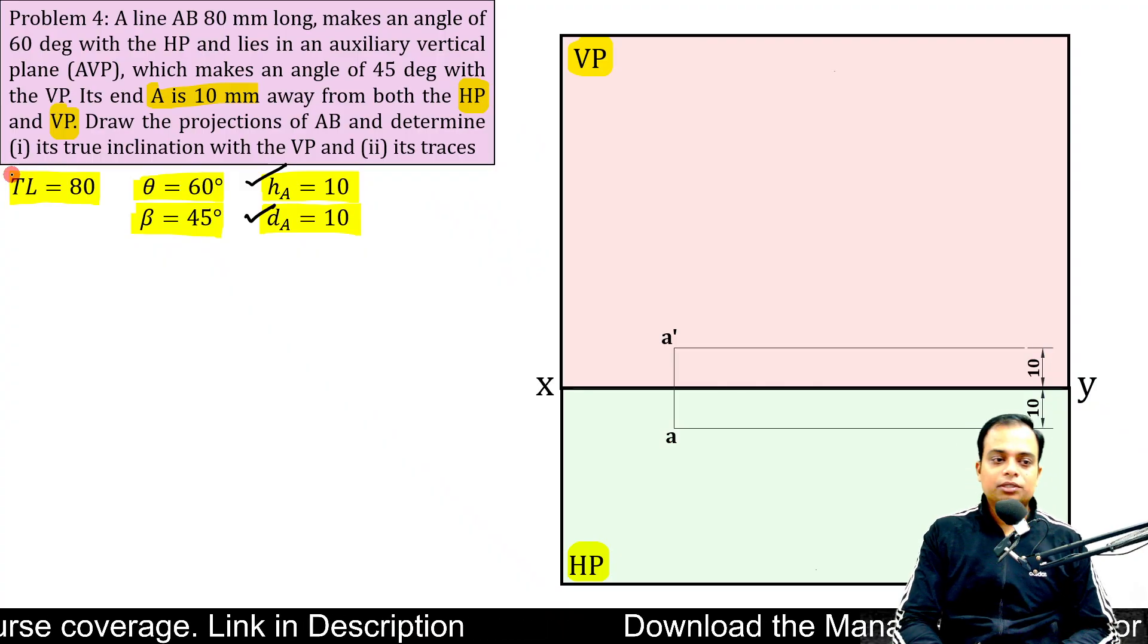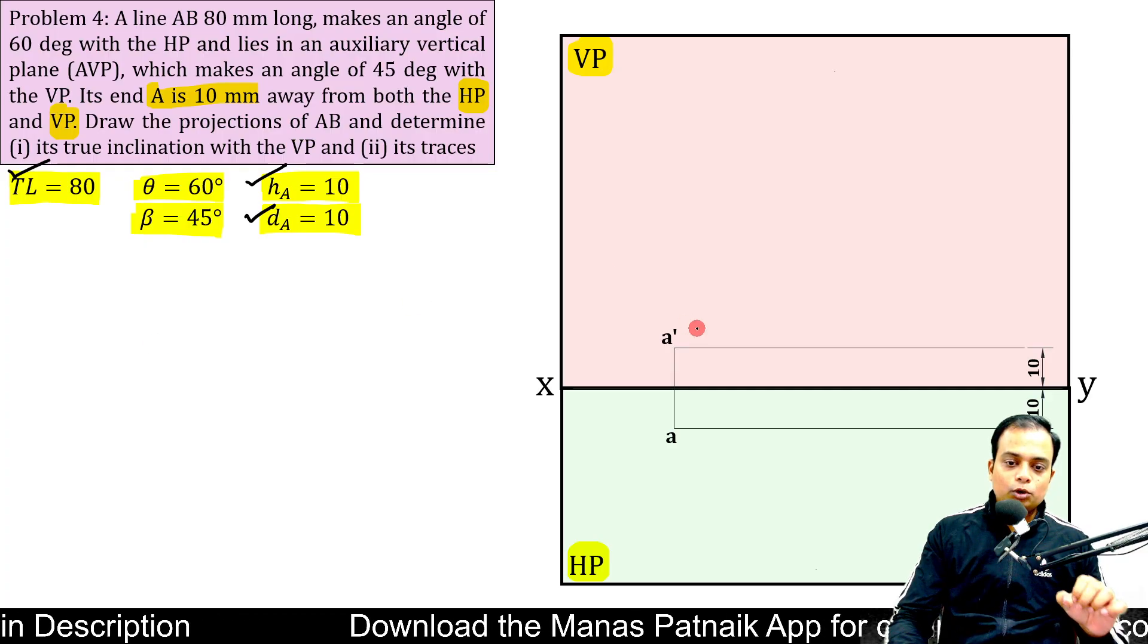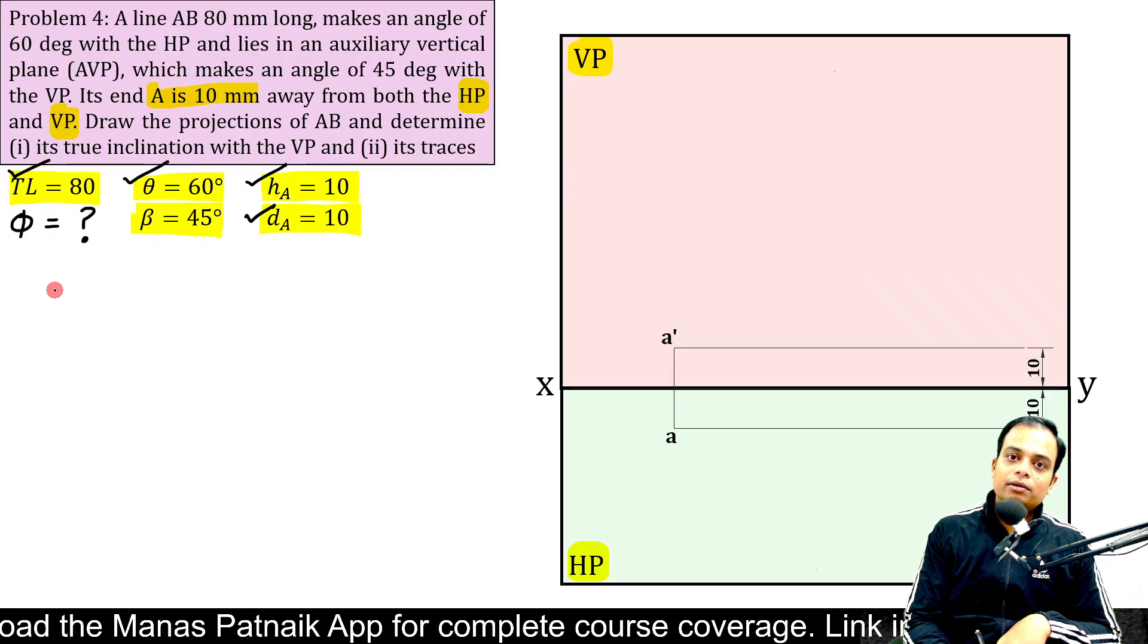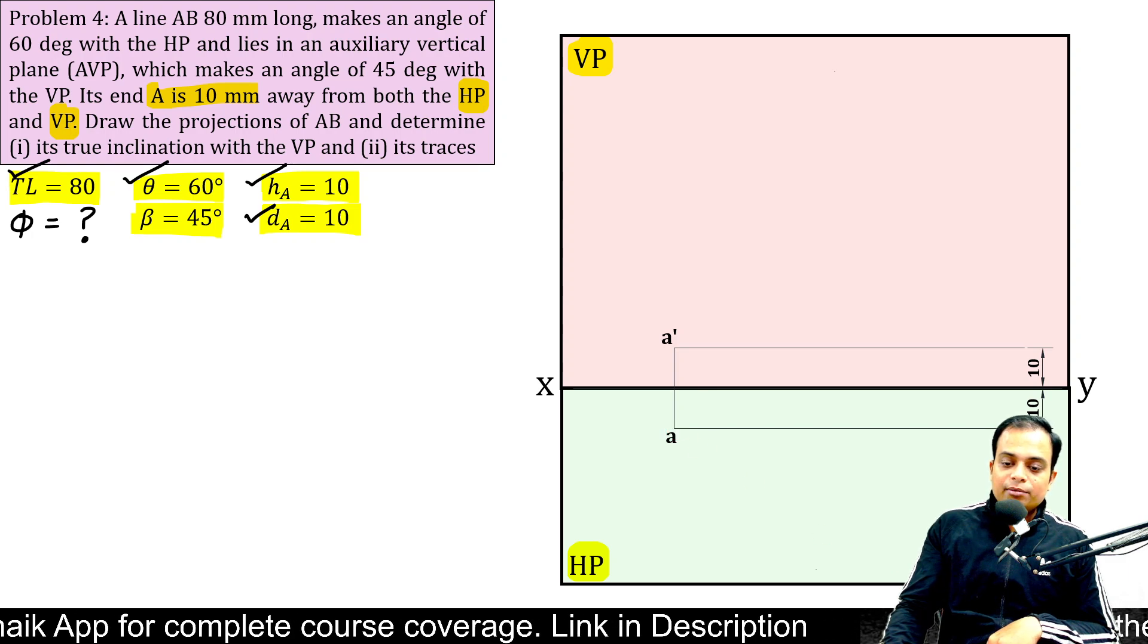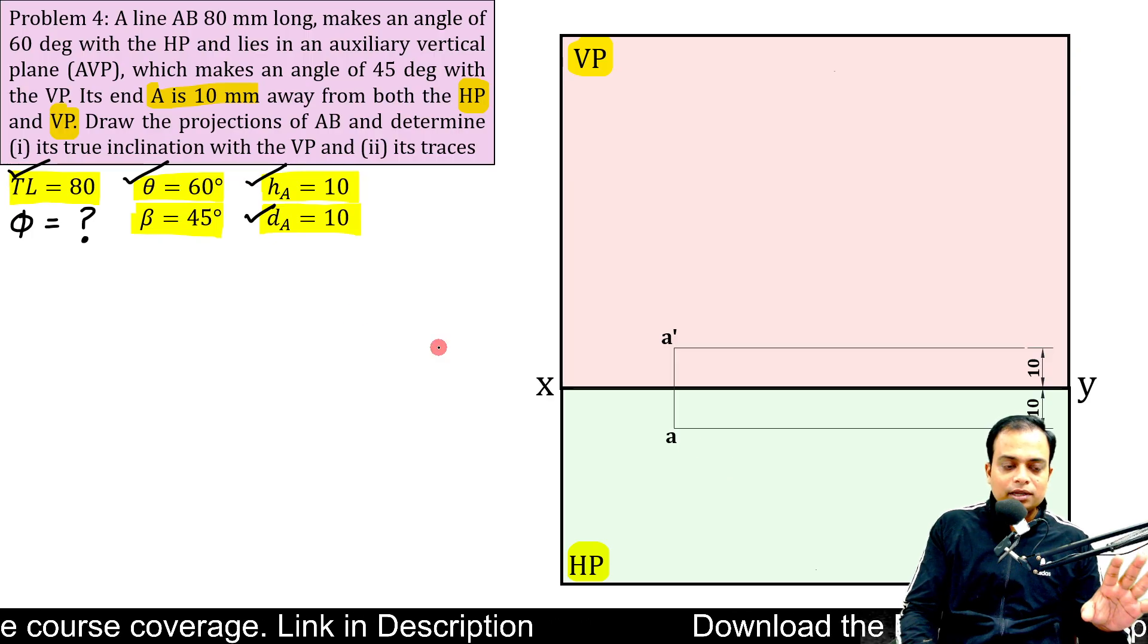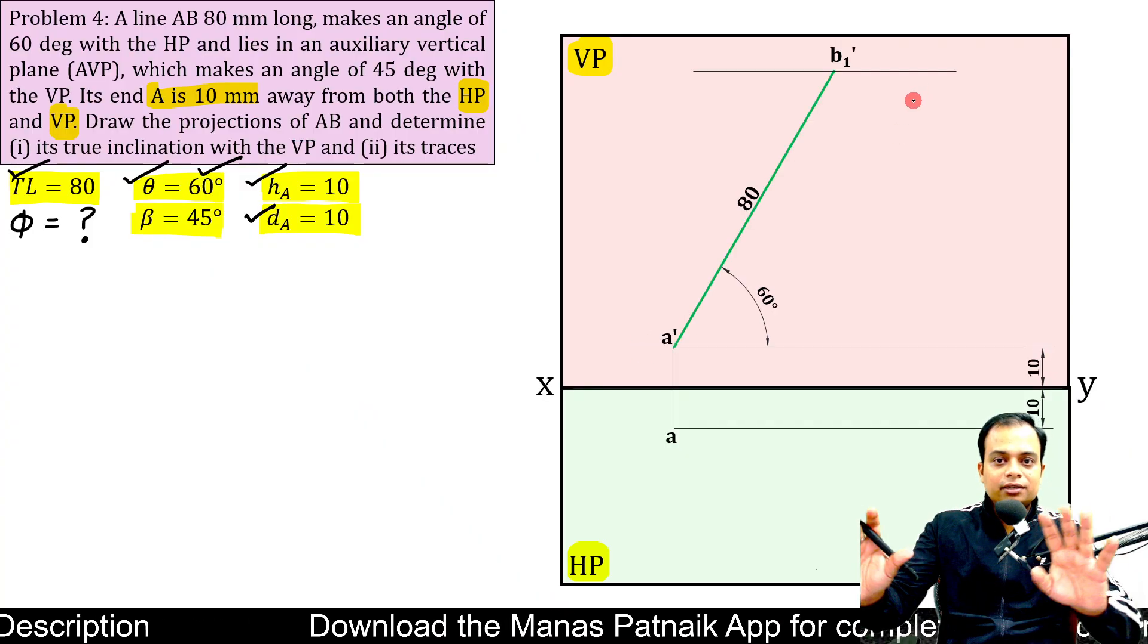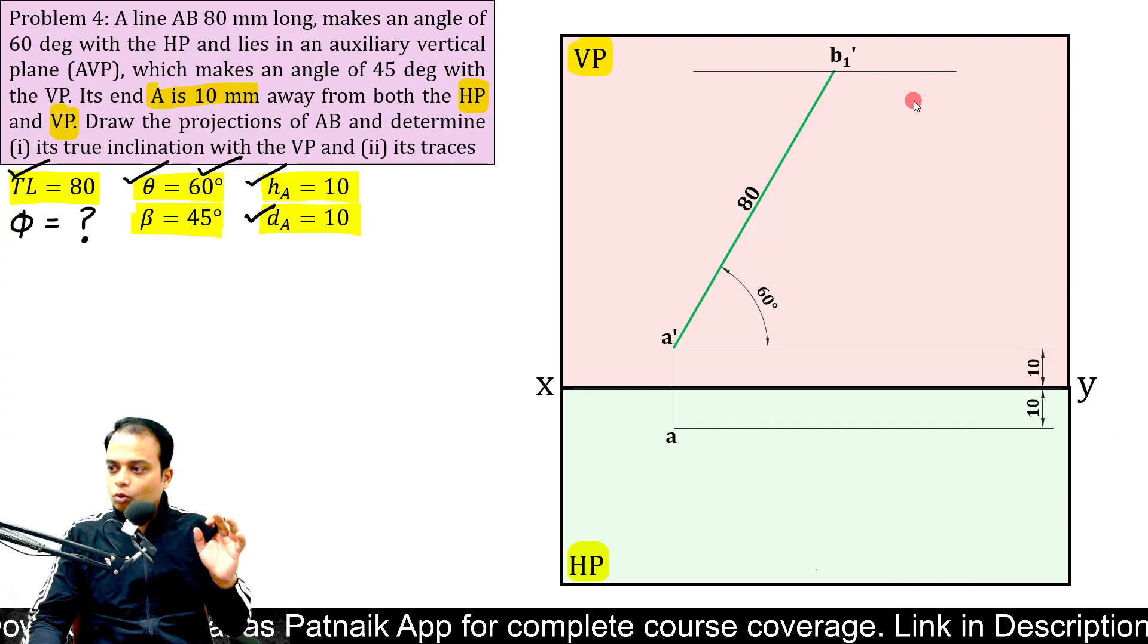The next data that I am going to use is this true length which is 80. Now true length has to be put up with some angle and the angle is going to be theta. Please note phi is not given to us. This is something that we need to work out. If phi had been given to us, then we would have marked the 80 mm at that angle phi. But so far we know that theta is given to us. So at an angle of 60 degrees, we are going to draw the true length of 80 mm.